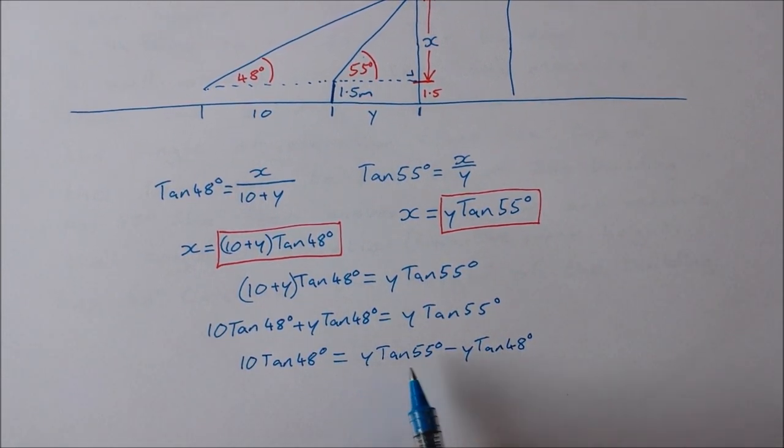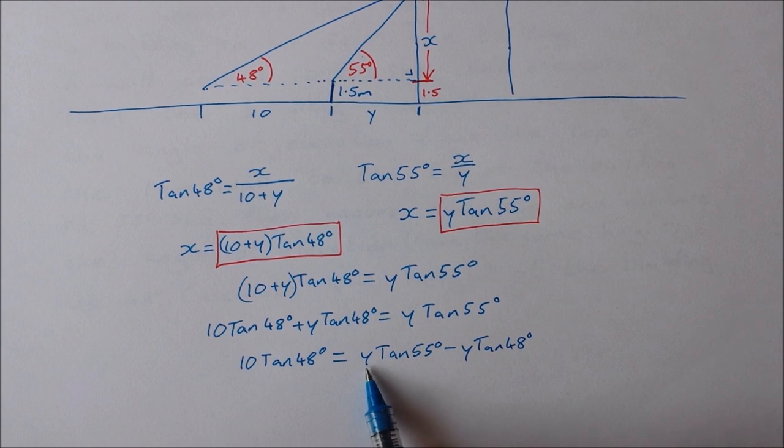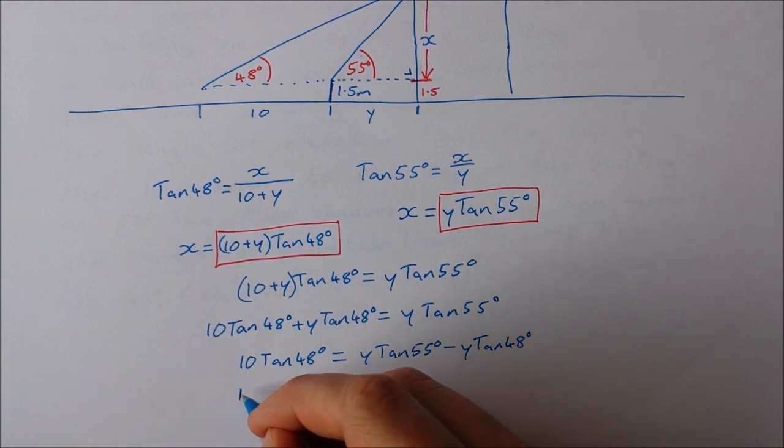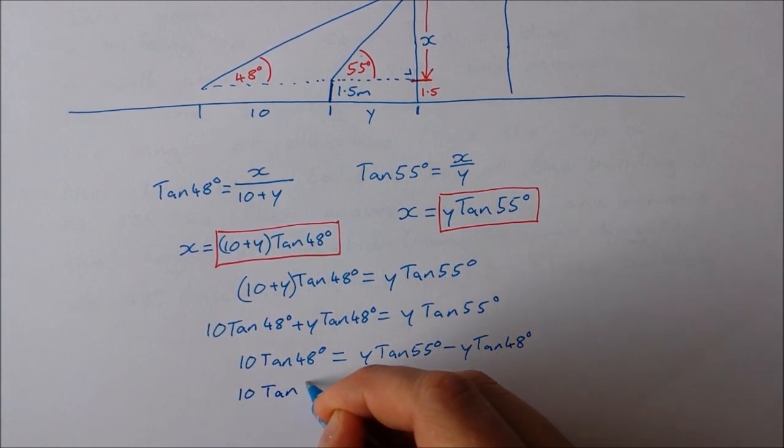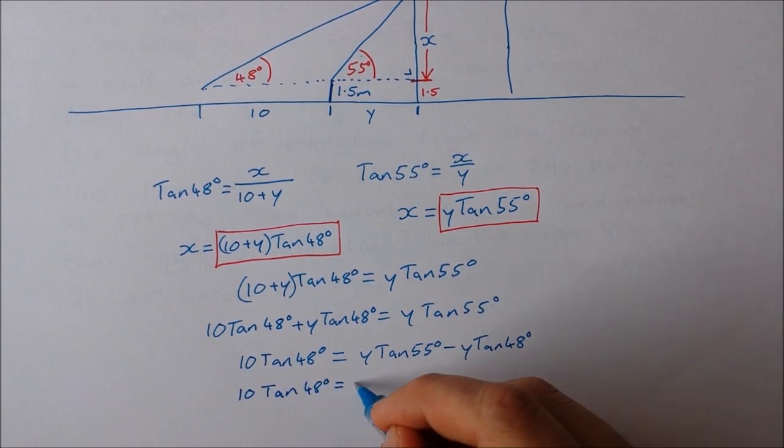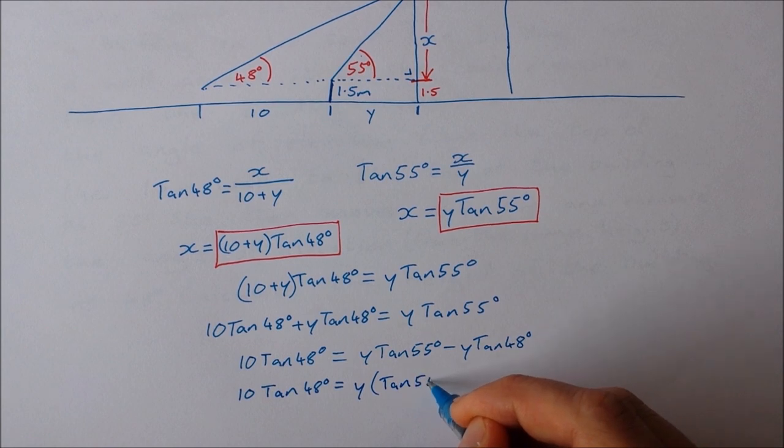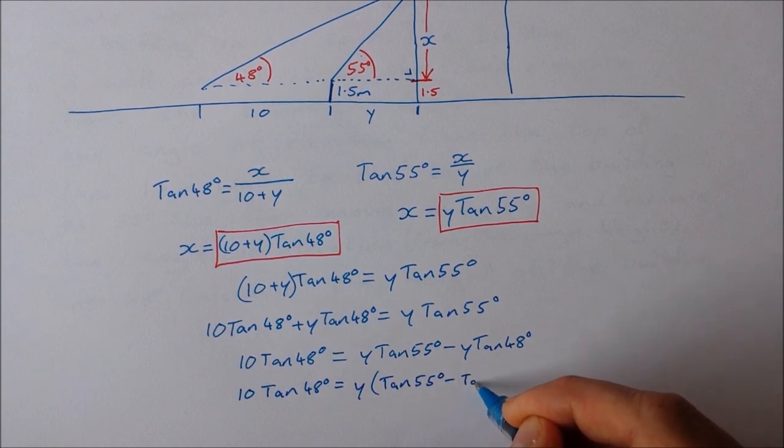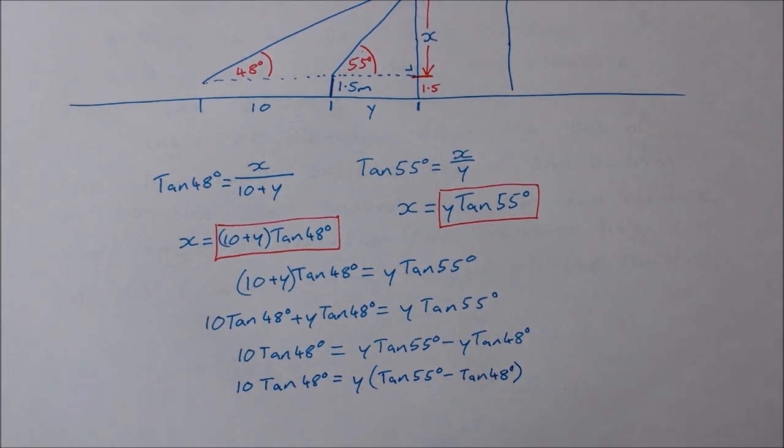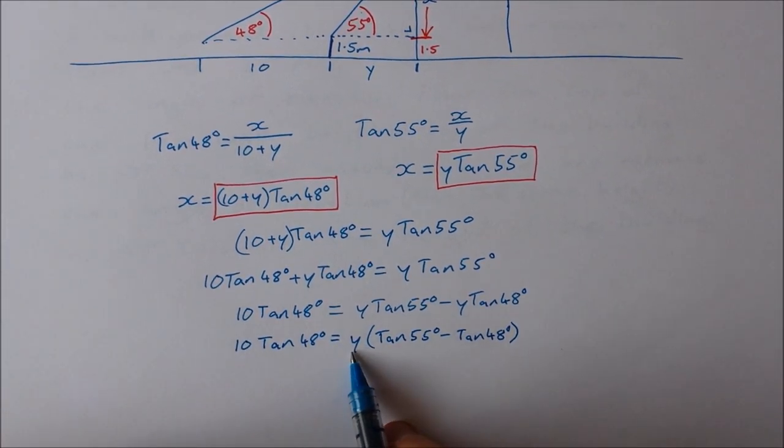Okay, I can do a bit of factorizing here. I can factorize out y. So that'll give me 10 tan 48 is equal to y times tan 55 minus tan 48.